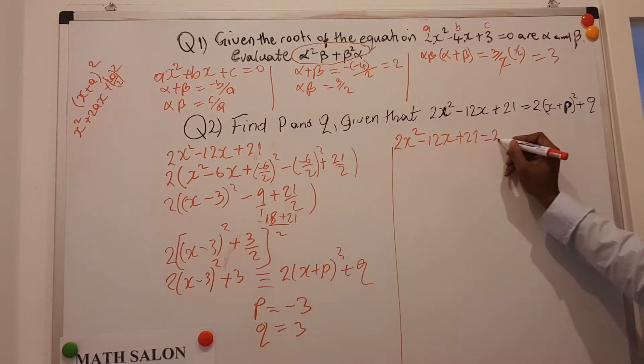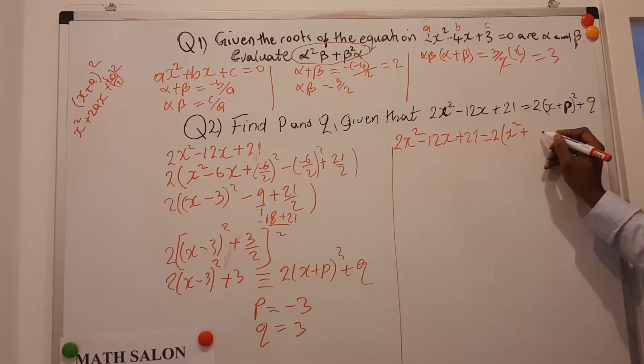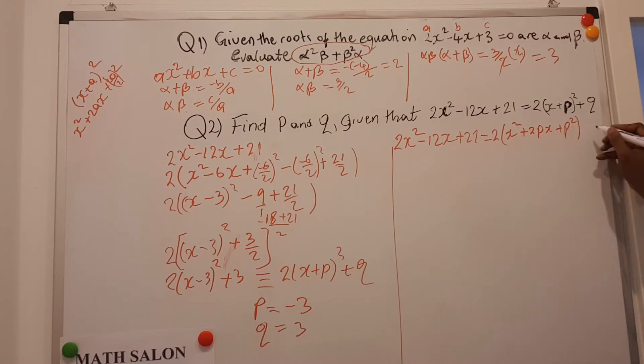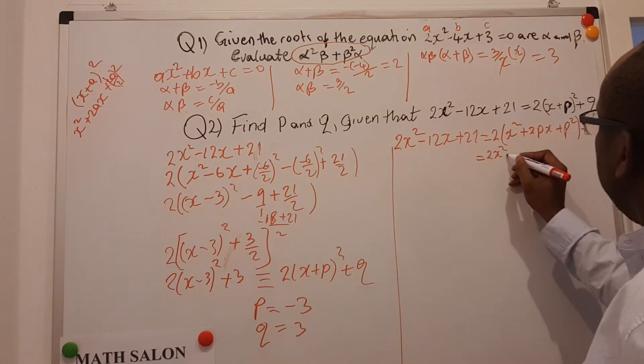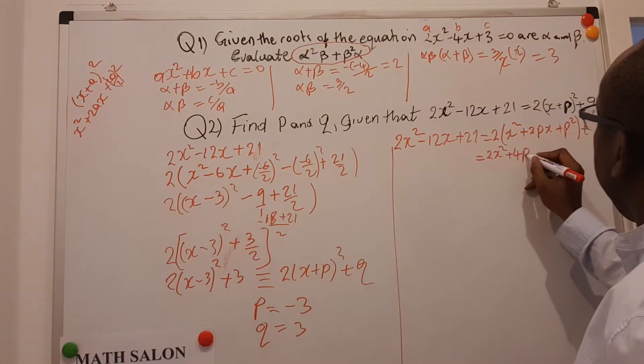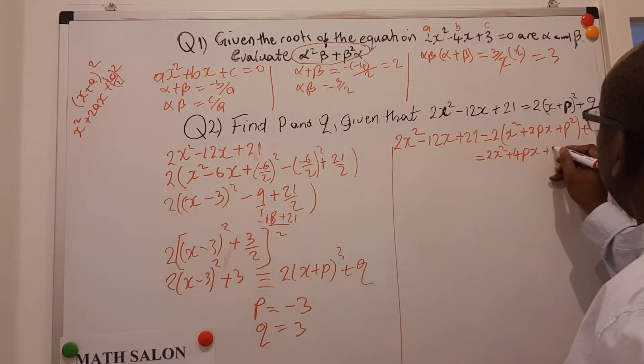I have 2 here outside, the expansion of this is x squared, plus 2px plus p squared, and plus my q. I can open this, and I get 2x squared, plus 4px, plus 2p squared, plus q.